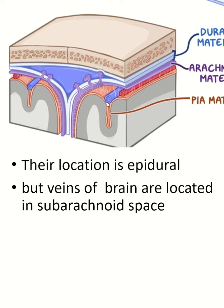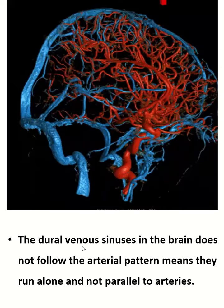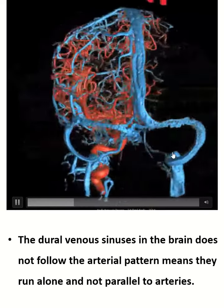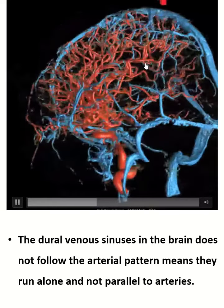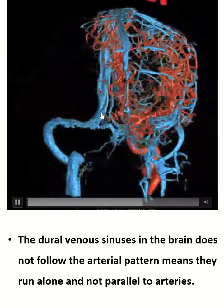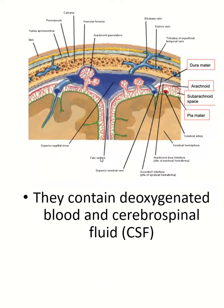The cerebral veins are located in the subarachnoid space. The dural venous sinuses do not follow the arterial pattern. They contain deoxygenated blood and CSF.